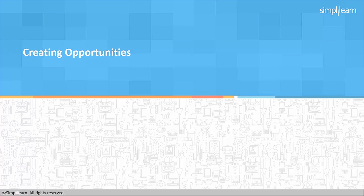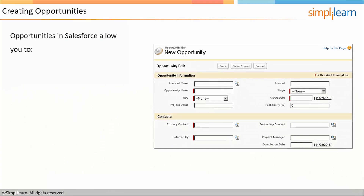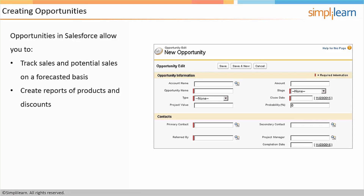The next thing we're going to talk about is creating opportunities in Salesforce. Opportunities in Salesforce allow you to track your sales and potential sales and also forecast on them. You can run reports and see what opportunities are scheduled to close based on their close date and dollar amount, as well as any stage information. You can also do reports of products and any discounts, and report on win rates and overall sales effectiveness. For example, if you have 100 opportunities and 10 of them get closed, you can say you've got a 10% win rate. An opportunity in Salesforce is really there for your salespeople to manage their pipeline — open proposals or open quotes would all be opportunities in Salesforce.